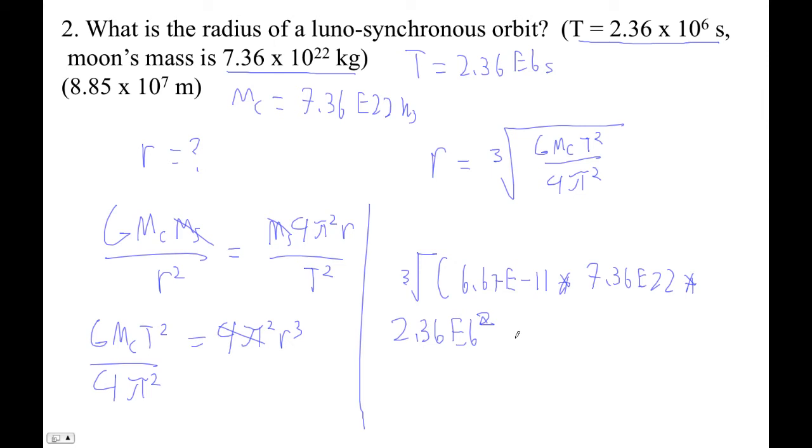Then you want to go divided by parentheses 4 times pi squared, right parentheses, right parentheses.